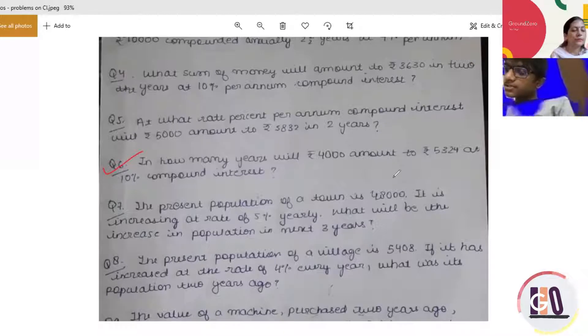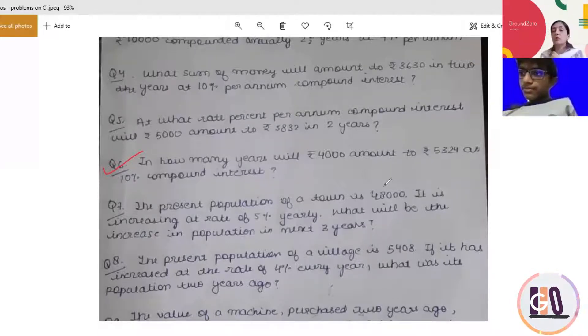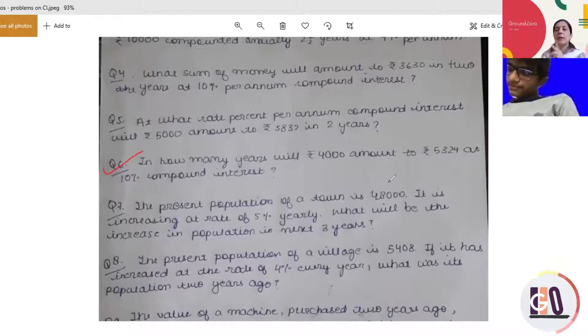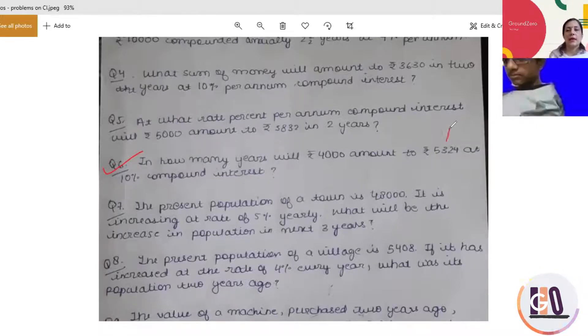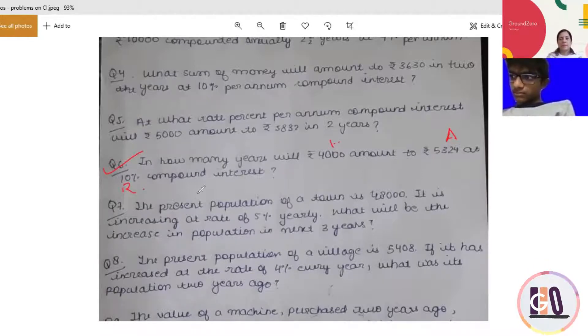So then 4,000 times... Use the same way, like now they are asking you the n. So try to make the base same. Then you can equate the powers, exponent terms. It will be easy for you to calculate. So just try out. This is the amount given. Principle is 4,000. The rate is given 10%. So just use the formula. Substitute the values and solve for it.